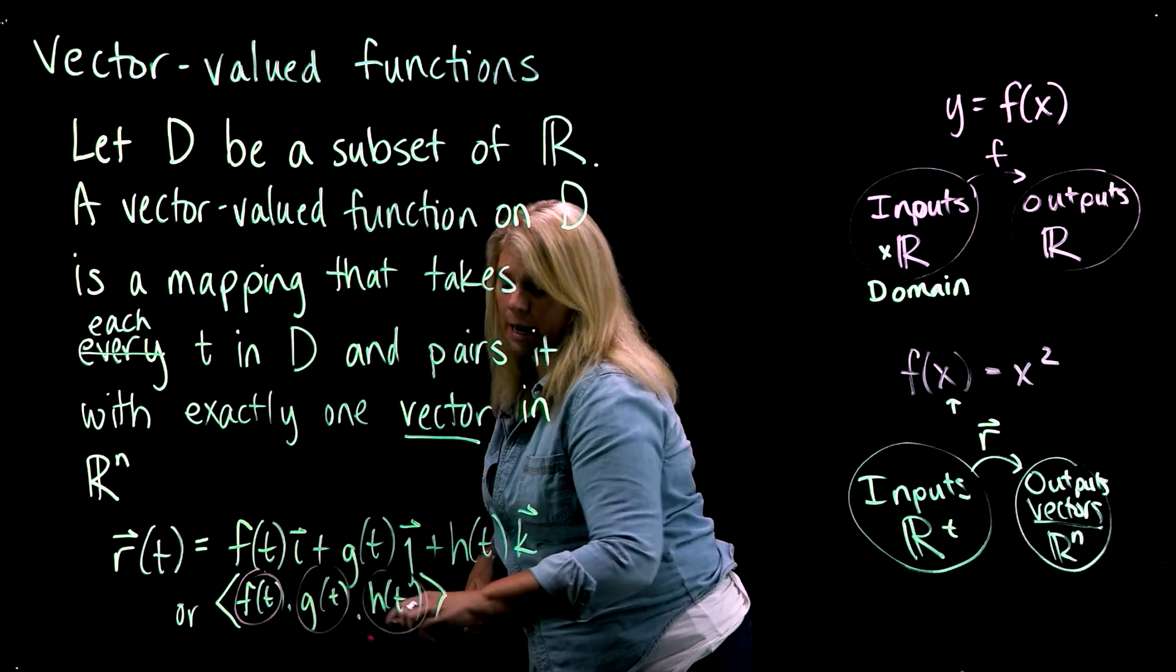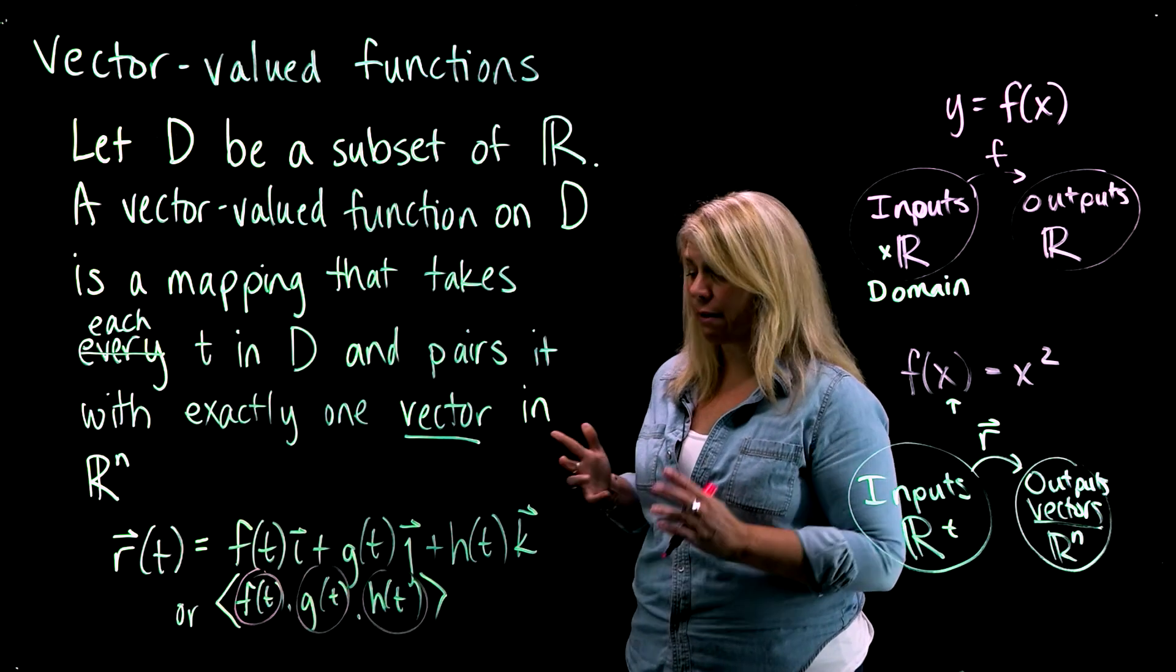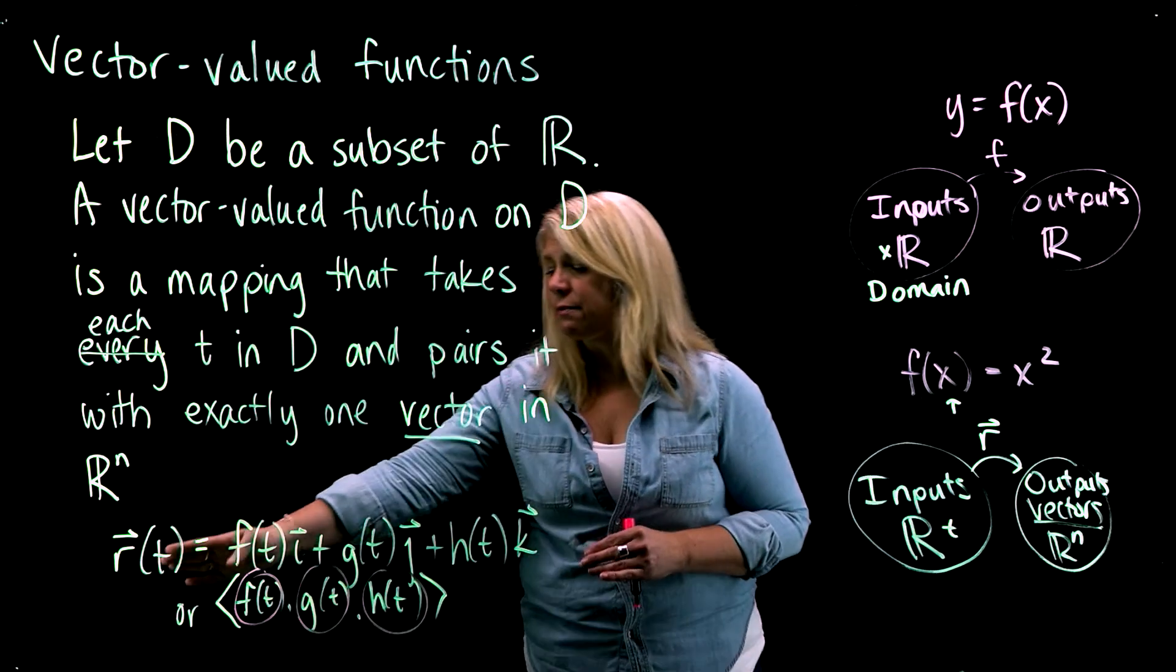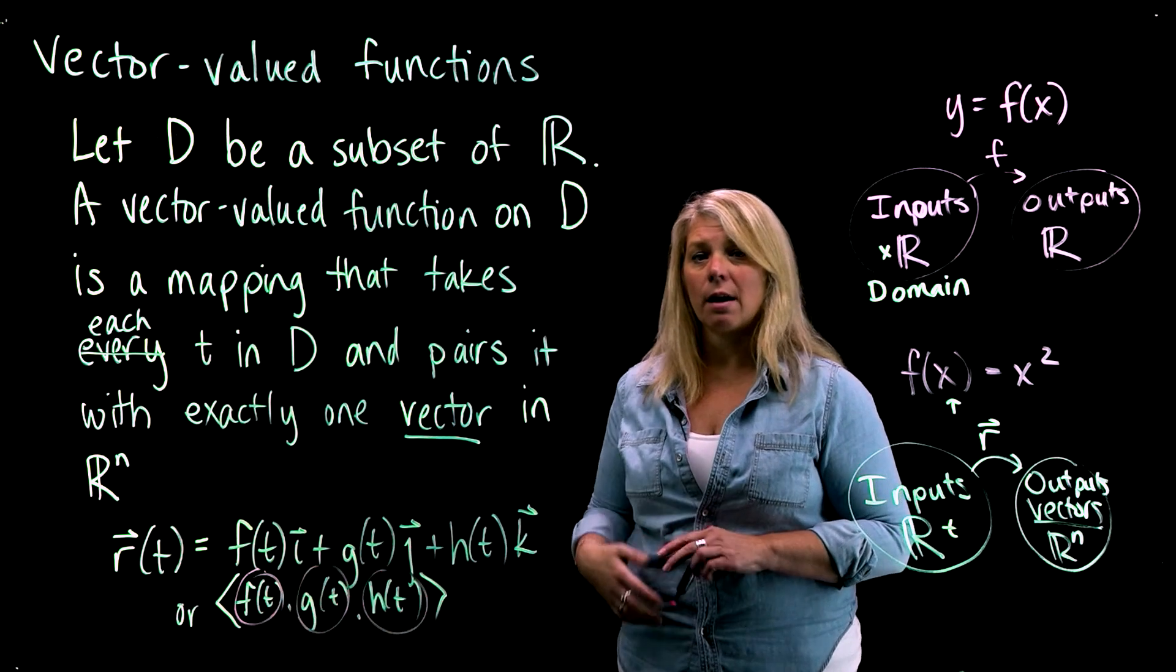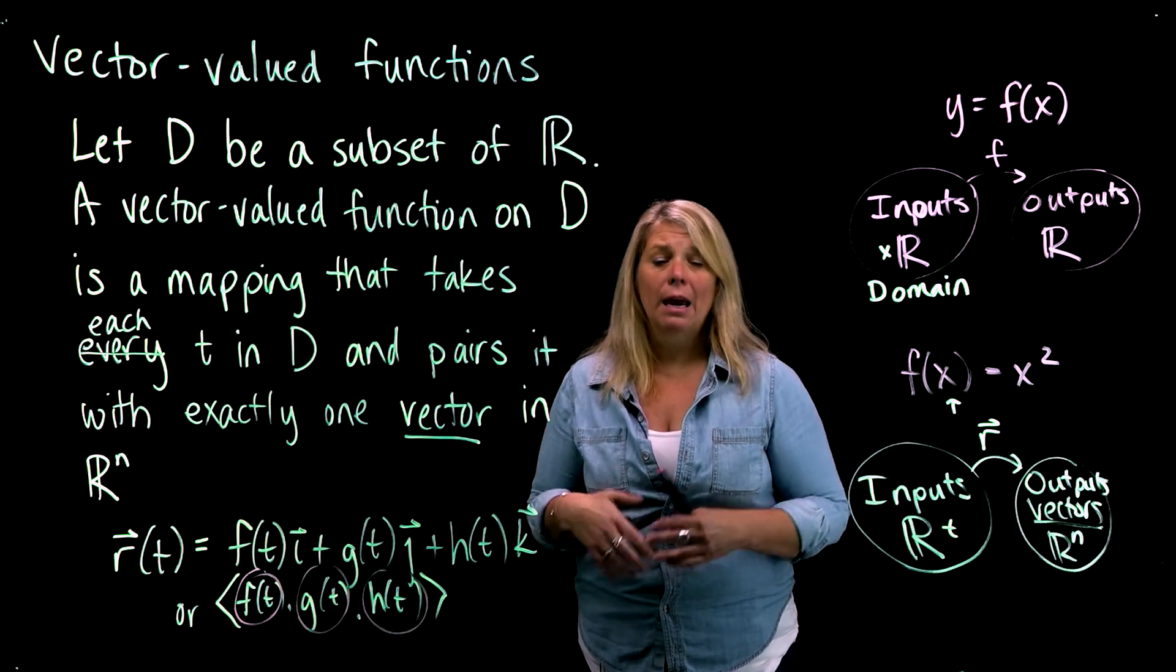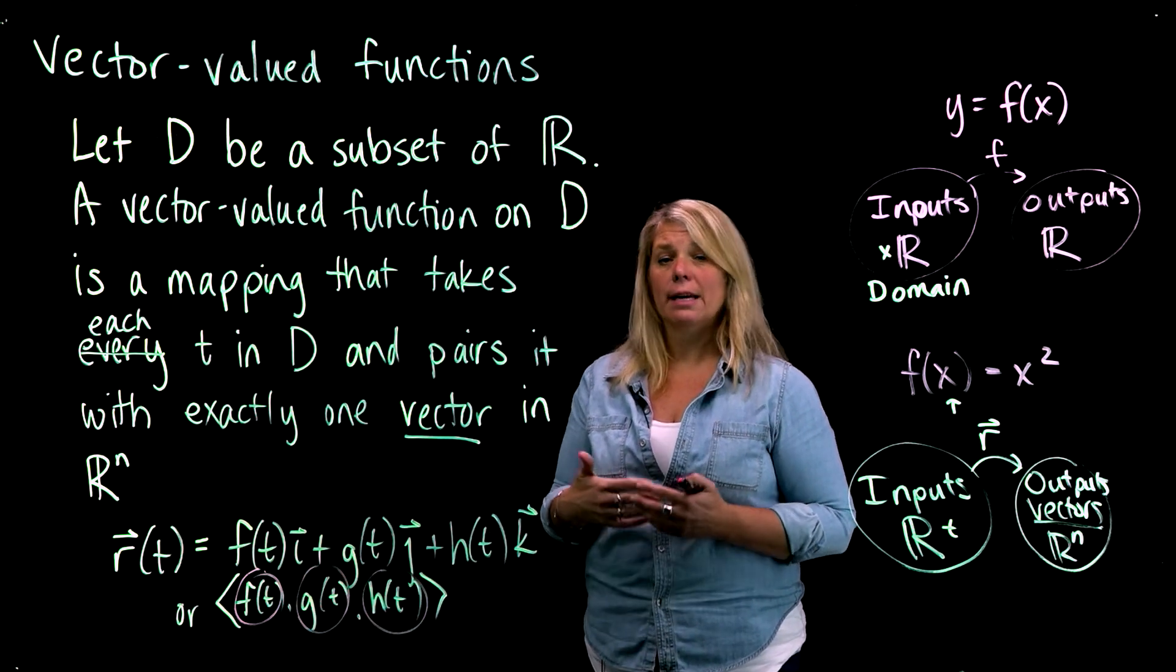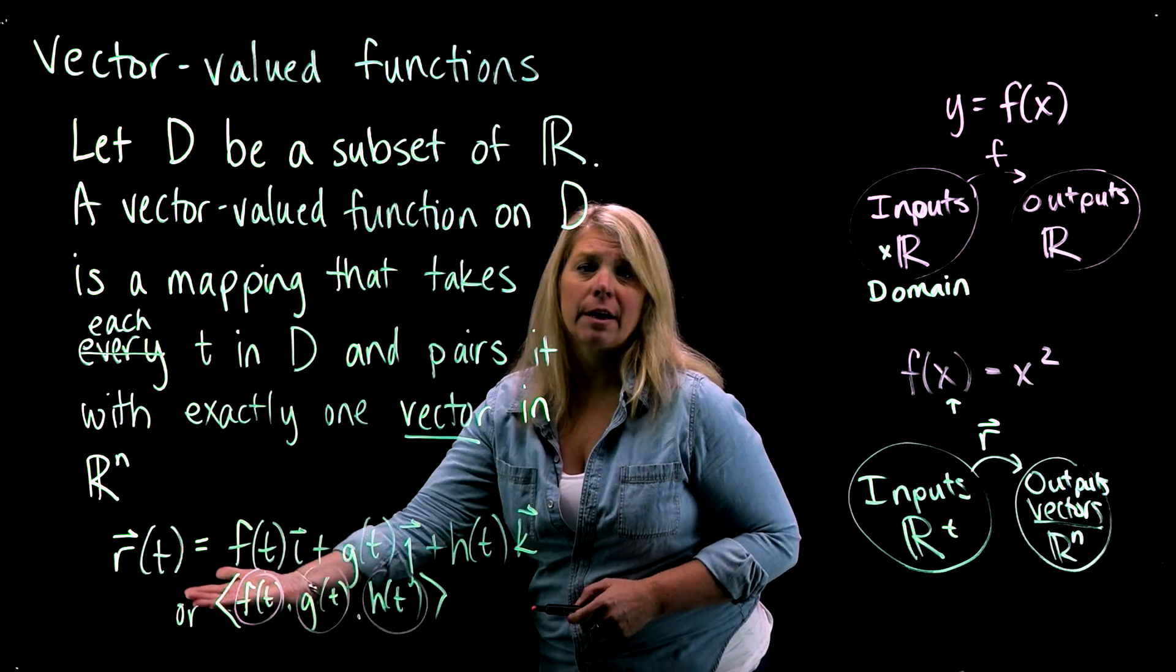These f, g, and h are component functions. We'll look at some examples in the next couple videos. The properties that this vector-valued function has are going to depend a lot on what these component functions are. If these component functions are nice functions that don't have problems with domain or continuity, then you have a nicely behaving vector-valued function. But if you have component functions that have issues related to continuity or domain restrictions, those are also going to be relevant for your vector-valued function.